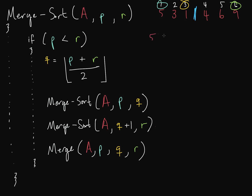We now have elements 5, 3, and 1 at indices 1, 2, and 3. This is our new merge sort recursive call. P is 1 and R is 3. Since 1 is less than 3, we find Q: 1 plus 3 is 4, divided by 2 is 2. We call merge sort again from P to Q, dividing at index 2.